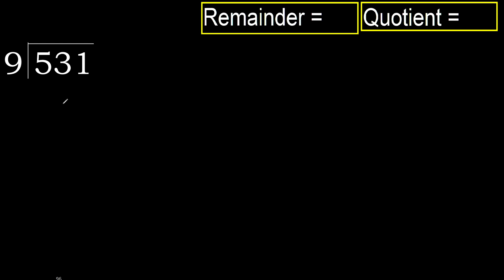531 divided by 9. 5 is less, therefore next: 53. 53 is not less, therefore with 53, 9 multiplied by which number is nearest to 53 but not greater? 9 multiplied by 6...